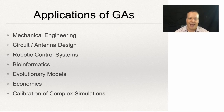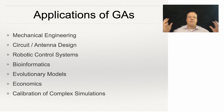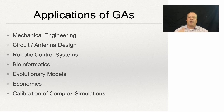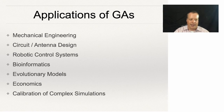They've been used to study the actual physical process of evolution, and to study real economics and try to understand how stock markets work. They've also been used to calibrate complex simulations. If you imagine a big complex model like a model of the whole US economy, there are probably a lot of parameters you don't know the exact value of. GAs have been used very effectively to calibrate those parameters by fitting the data seen in the past.